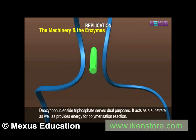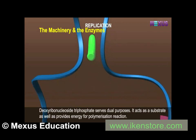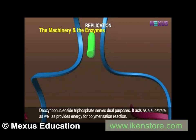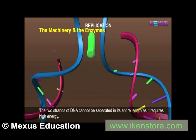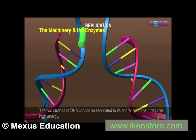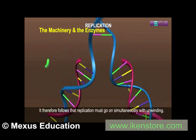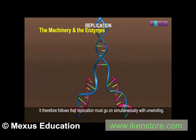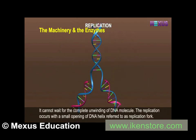Deoxyribonucleoside triphosphate serves dual purposes: it acts as a substrate as well as provides energy for the polymerization reaction. The two strands of DNA cannot be separated along their entire length as it requires high energy. Therefore, replication must proceed simultaneously with unwinding. It cannot wait for complete unwinding; instead, replication occurs with a small opening of the DNA helix referred to as the replication fork.